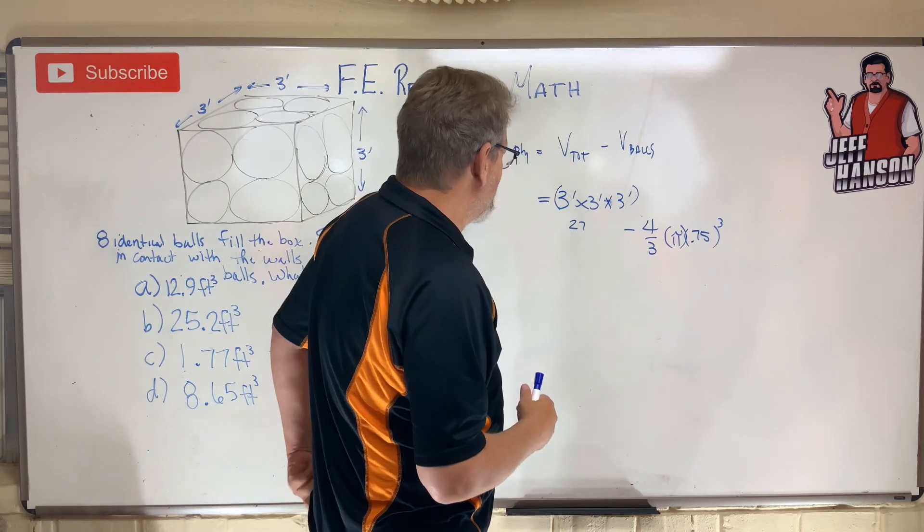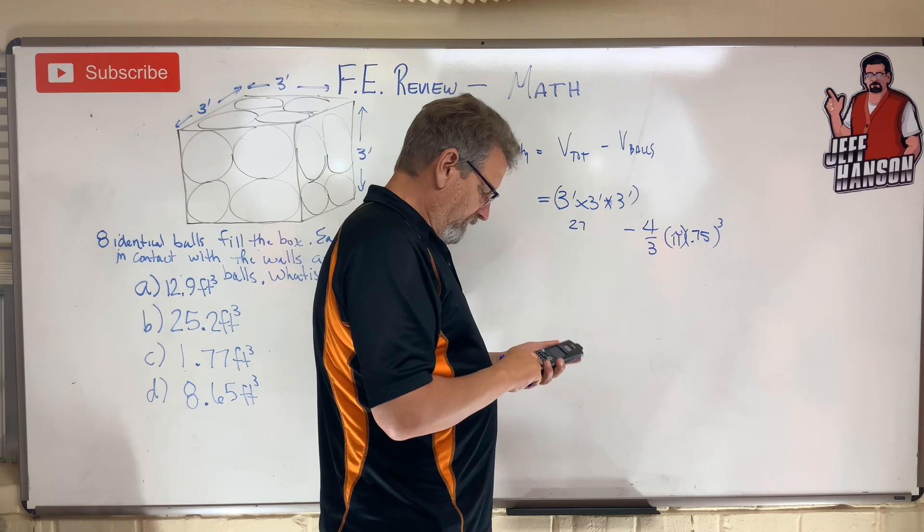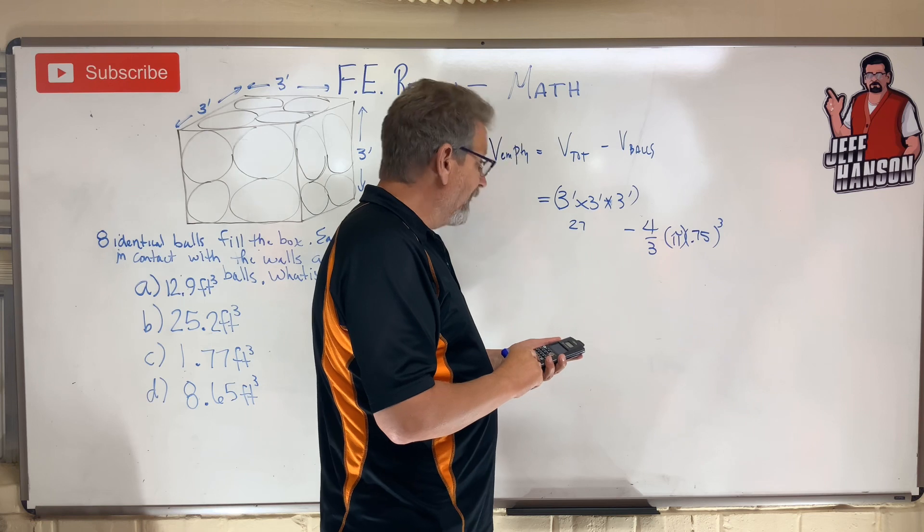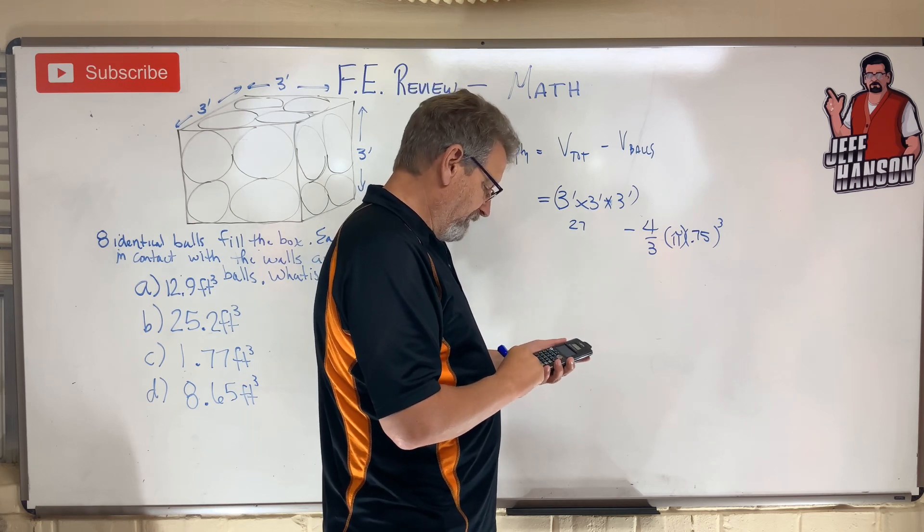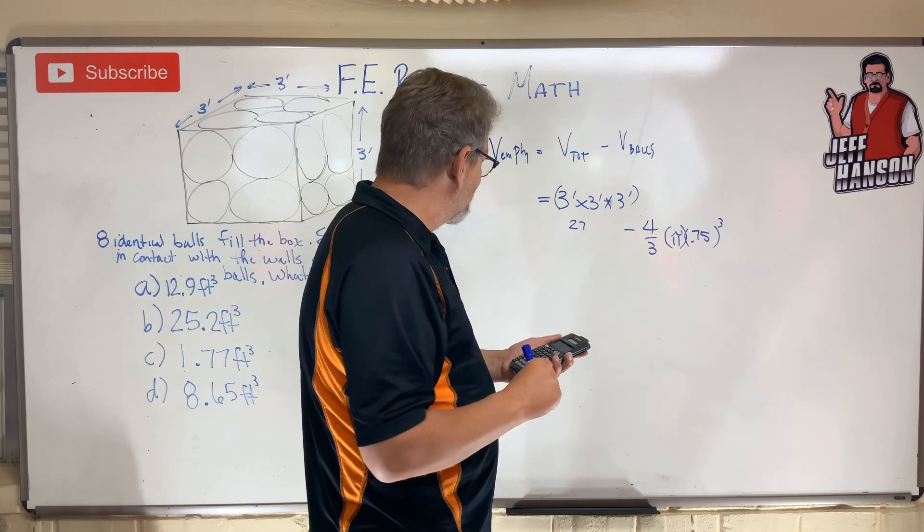Okay, calculator time on. 4 divided by 3 equals times pi equals 0.75 cubed equals 1.767